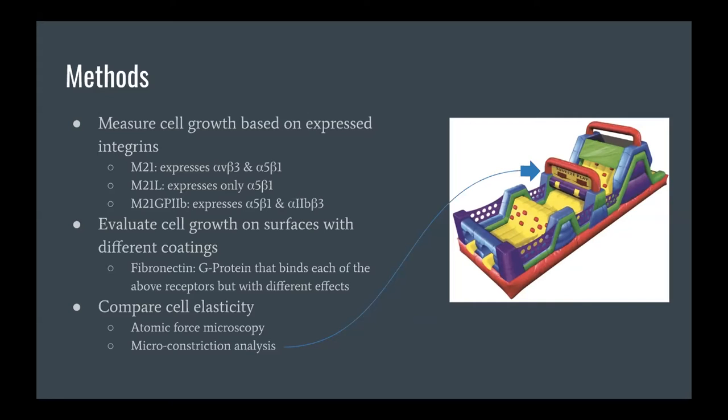The experiments they used included atomic force microscopy, which is a common way to measure cell stiffness. Basically, they probe the cell with a tip connected to a cantilever. When you poke the cell, that cantilever bends in a certain way and you can measure the elasticity based on how much it bends.